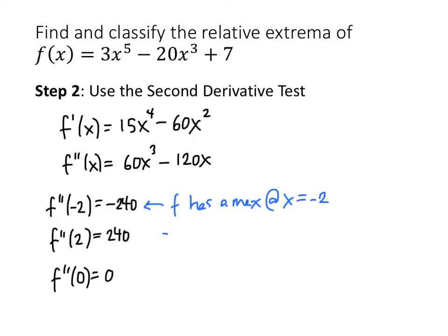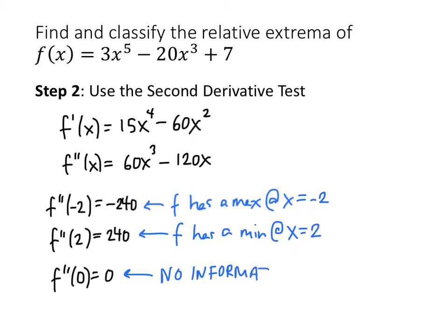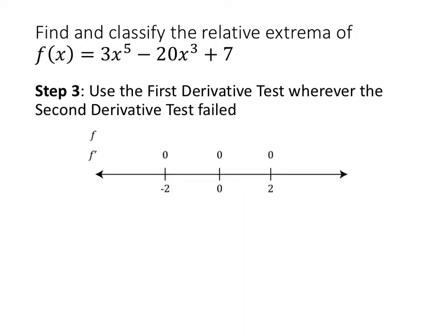When we plug positive 2 into our second derivative, we get a positive number, which means there is a relative minimum at x equals positive 2. Unfortunately, when we plug 0 into our second derivative, we get 0, and that gives us no information. The test doesn't tell us anything about the critical value x equals 0 — we could have a max there, a min, or neither. We don't have to retest positive 2 and negative 2, but we do need to revisit x equals 0.